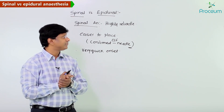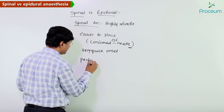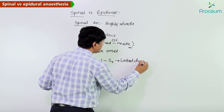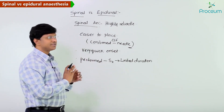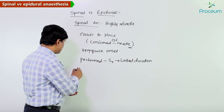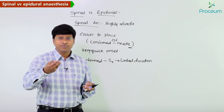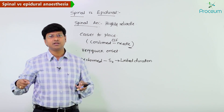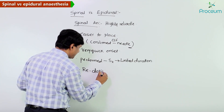The disadvantage of spinal anesthesia is that it can be performed only for surgeries of limited duration. For surgeries requiring a prolonged period, we cannot use spinal anesthesia. Another problem is redosing — if the surgery takes longer than expected, redosing cannot be done, because once the needle is placed in the subarachnoid space, it is removed after giving the spinal anesthesia.